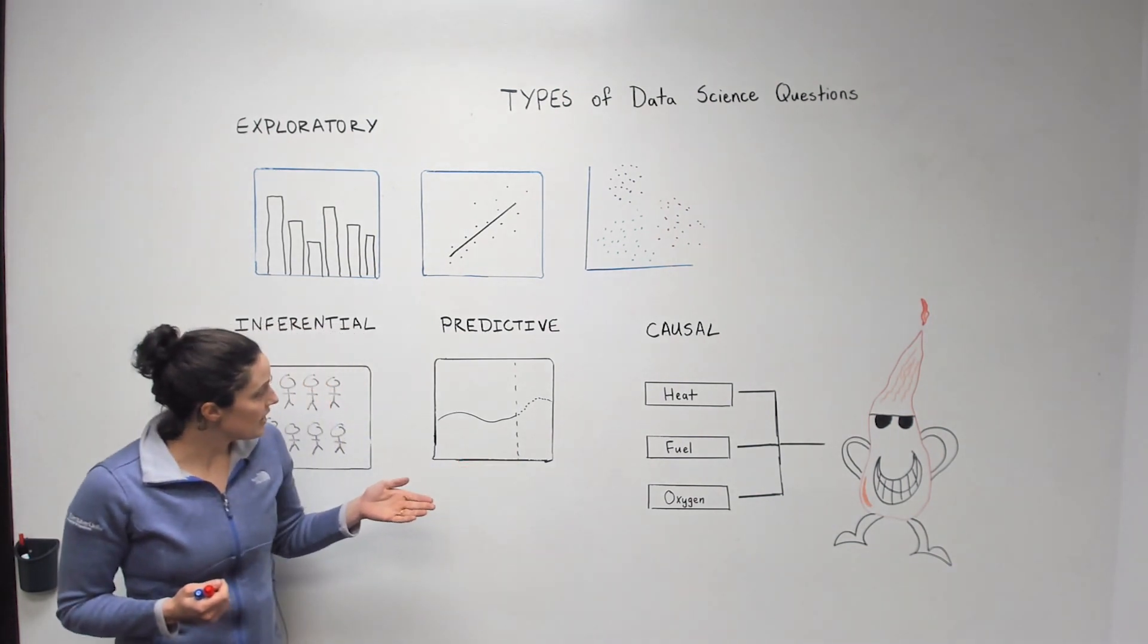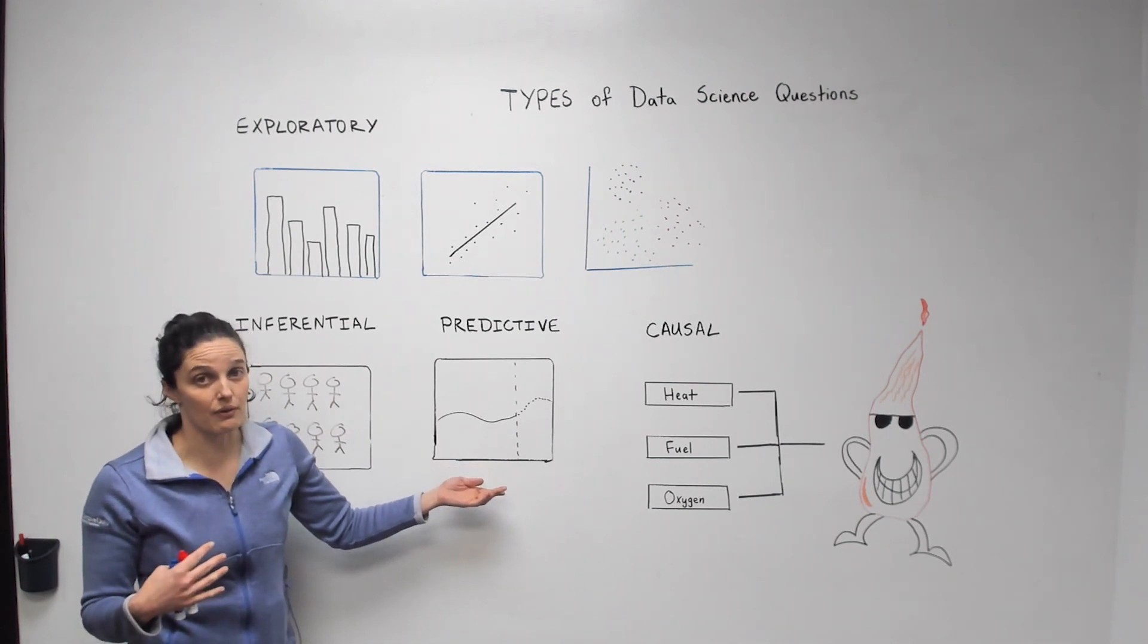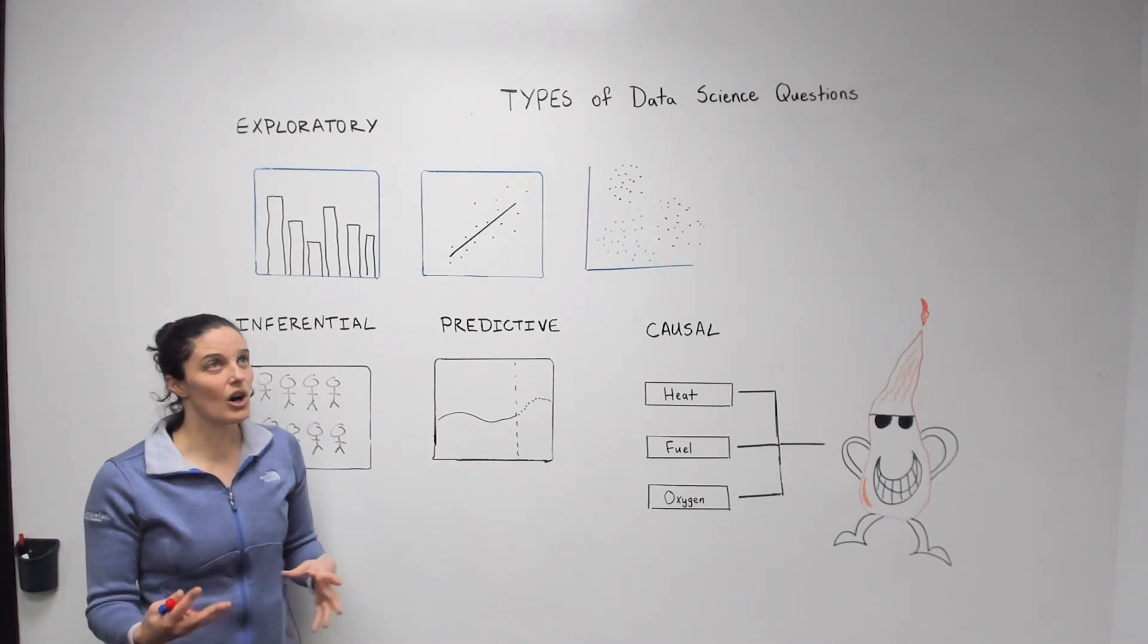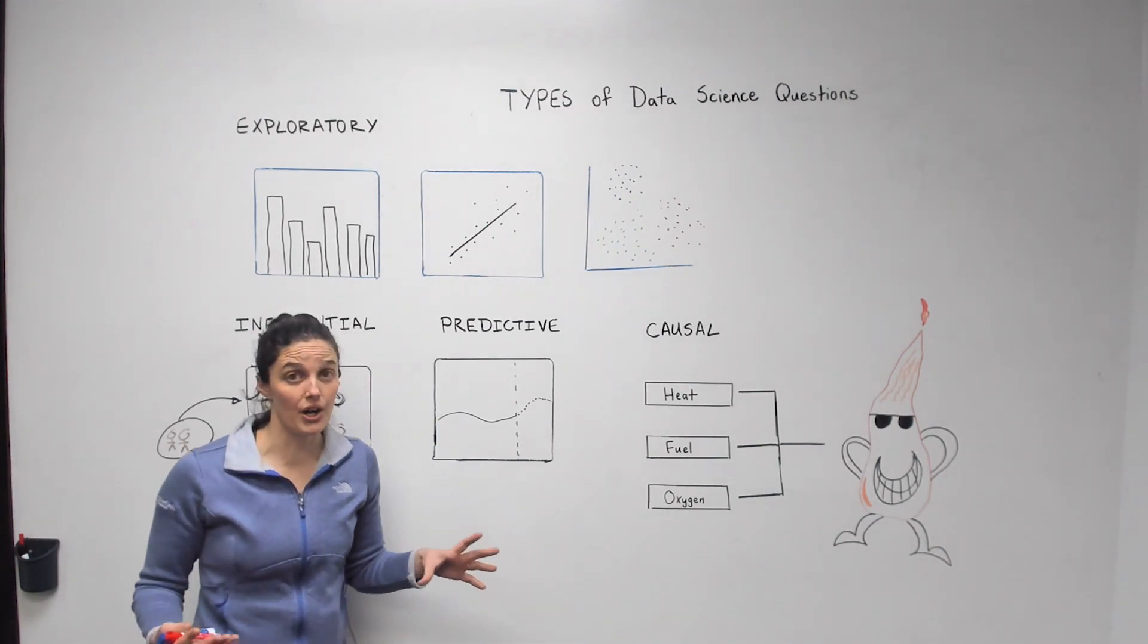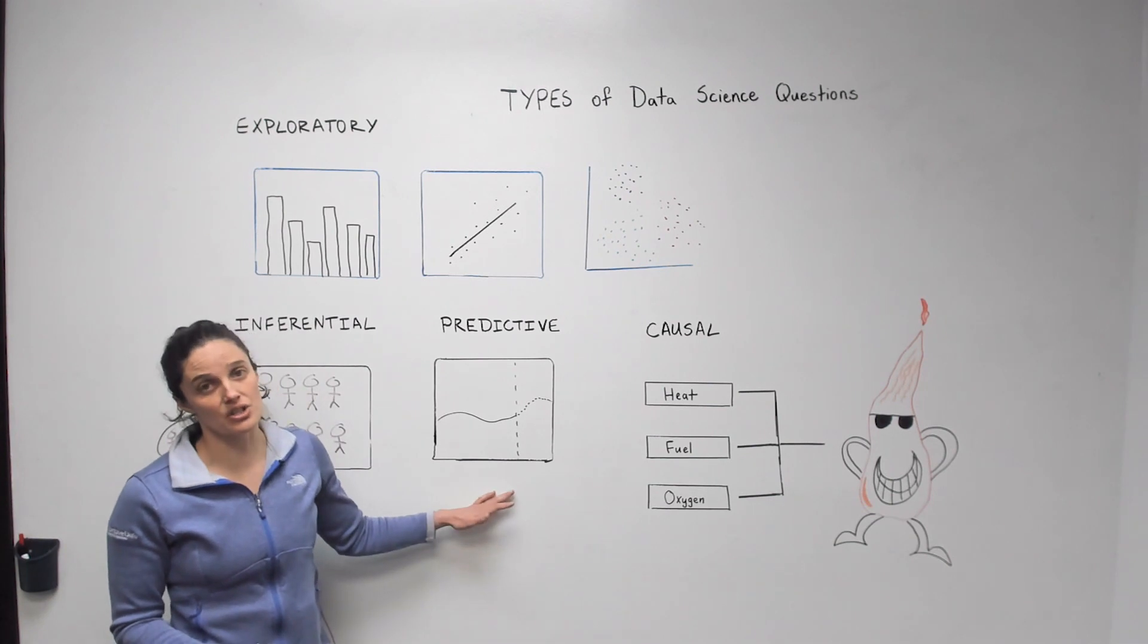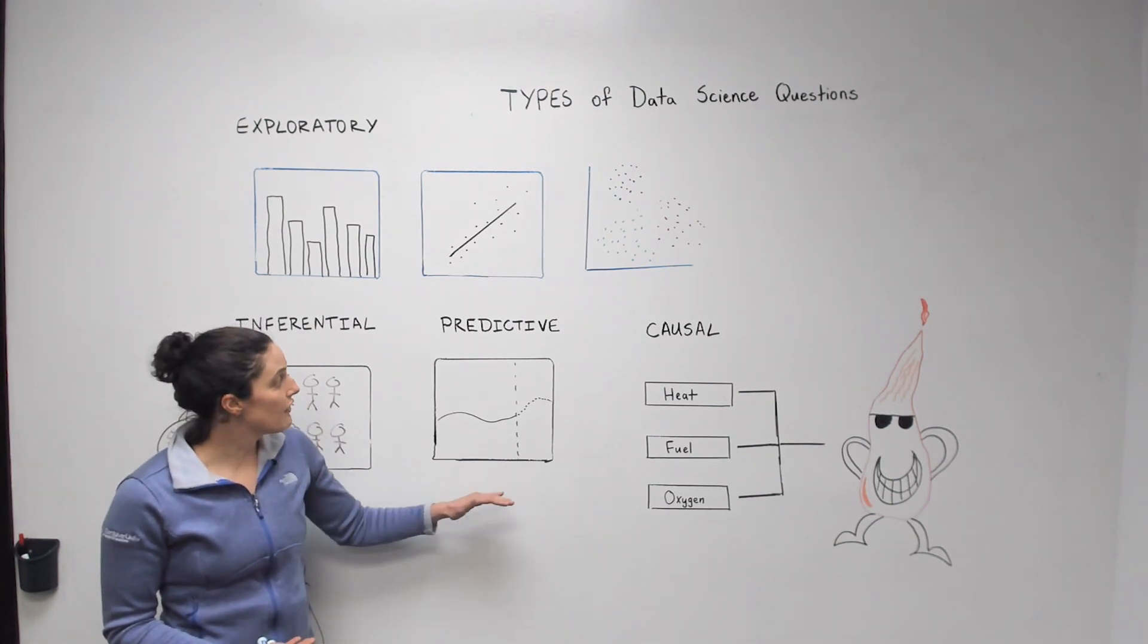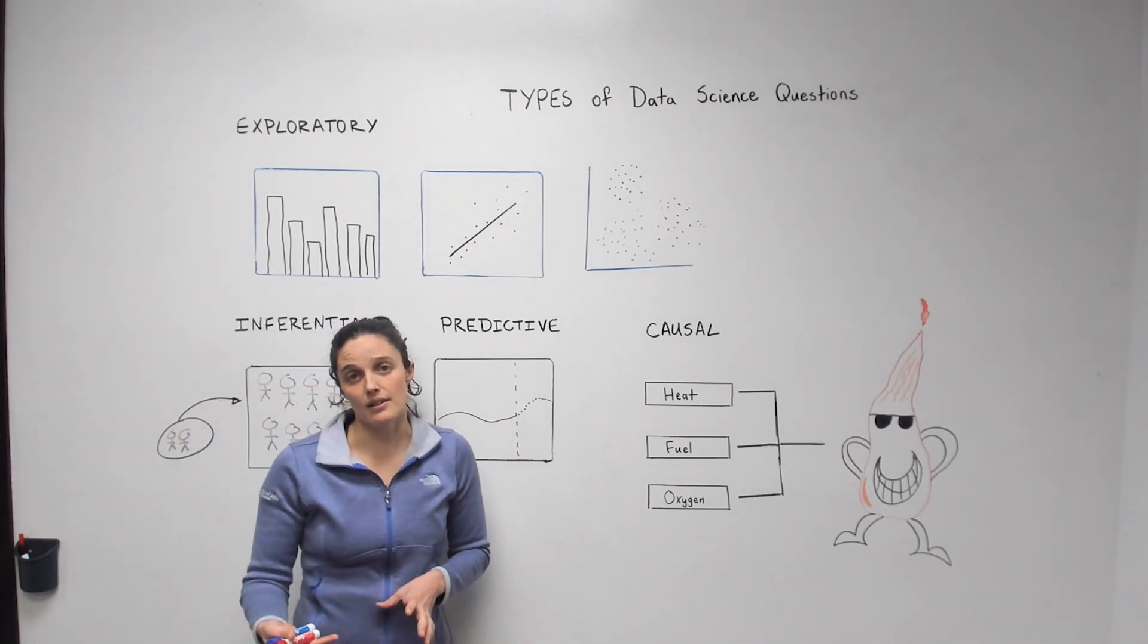So the next question is predictive, and this should be somewhat familiar to you because we've talked about it several times before. I think it's also a very attainable type of question because a lot of business people want to know what's going to happen in the future, which is what predictive questions are really all about. If you watched any of our previous videos, the example we really use a lot is around retail and sales.